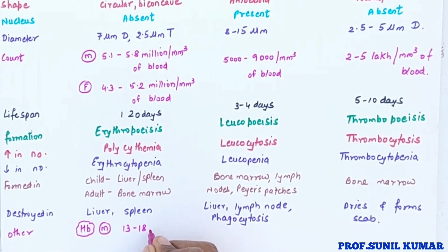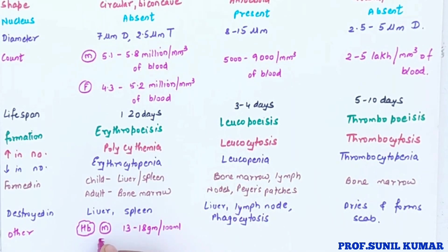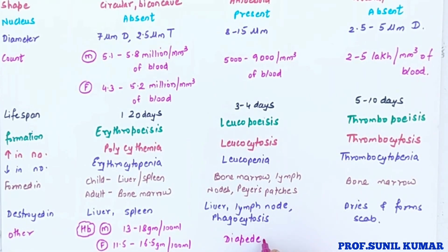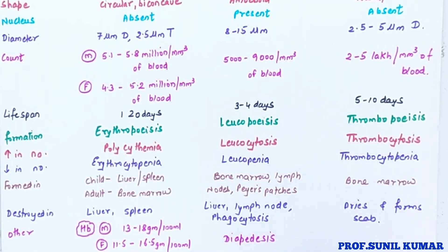RBCs contain hemoglobin, so the hemoglobin count is also important. In males it is 13 to 18 grams per 100 ml of blood, and in females it is 11.5 to 16.5 grams per 100 ml of blood. WBCs show diapedesis — the ability of WBCs to squeeze out through narrow capillaries to perform defense action.